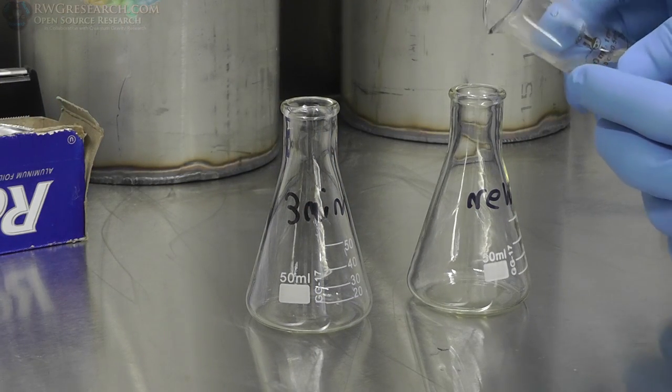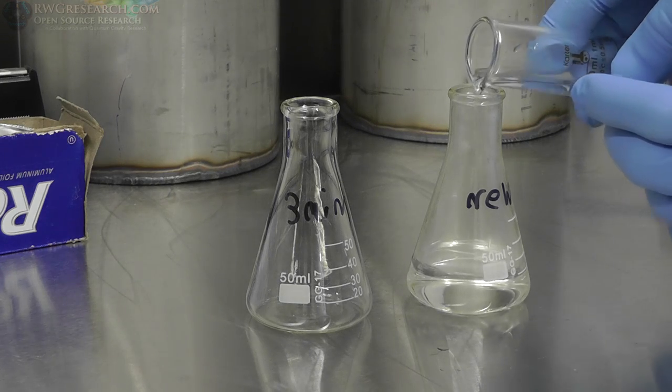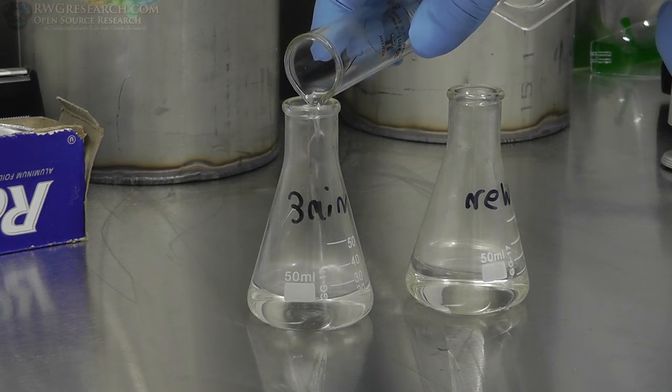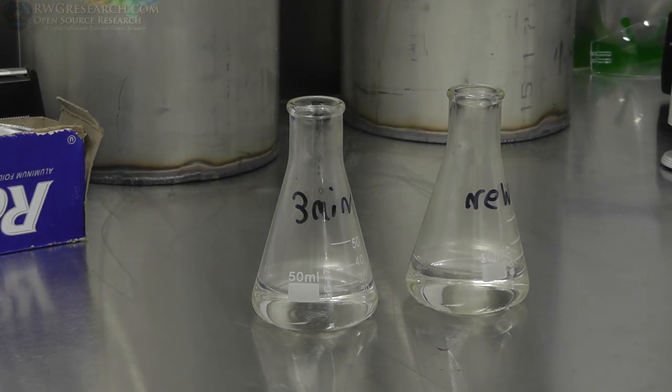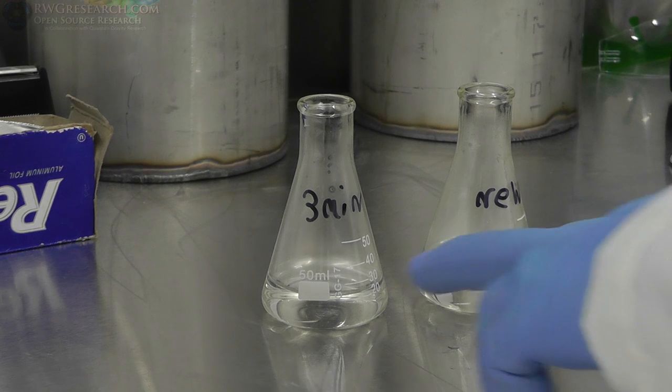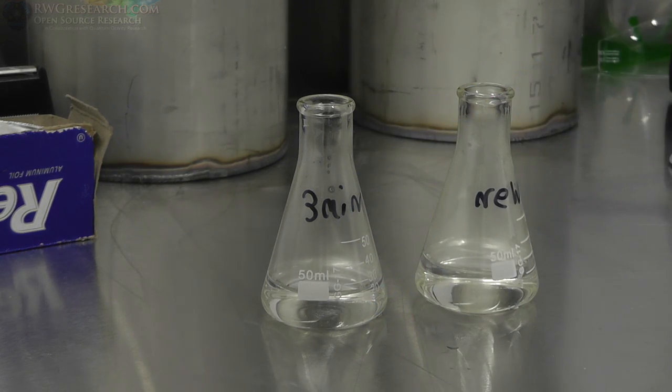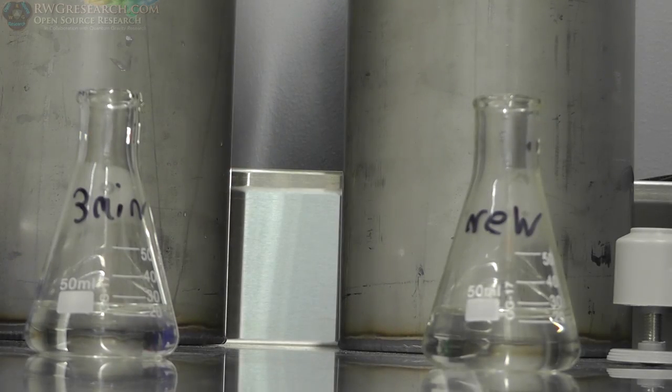So our solution is pretty well dissolved. It's looking really good. So now what we're going to do is we're going to pour it into these two jars and prep it for our etching process. You can tell the solution is still quite warm because it's actually evaporating and steaming up into the top of the glass there.